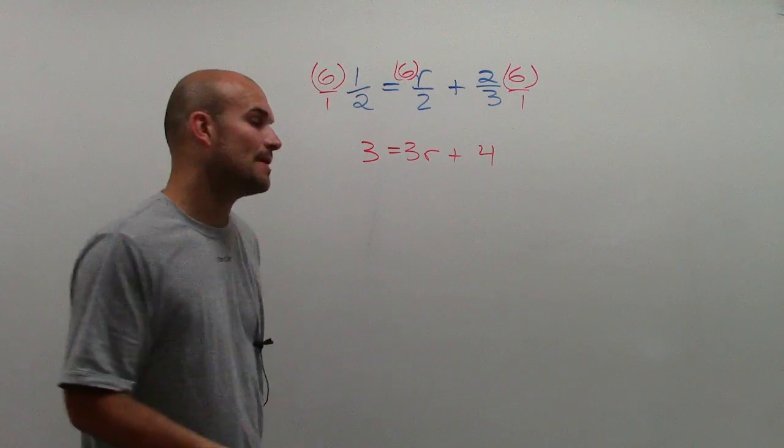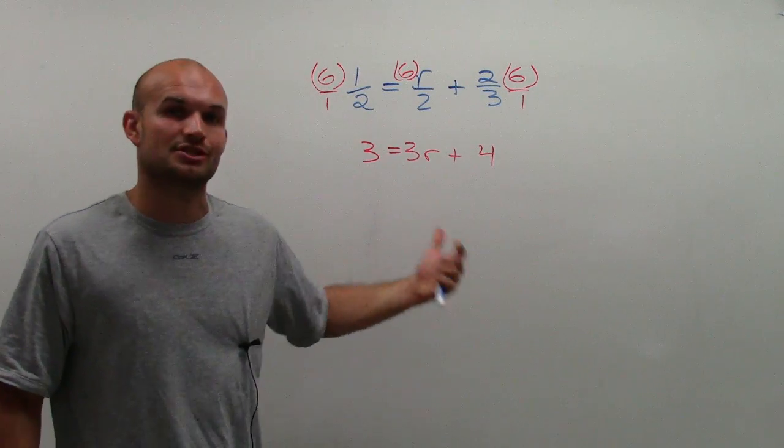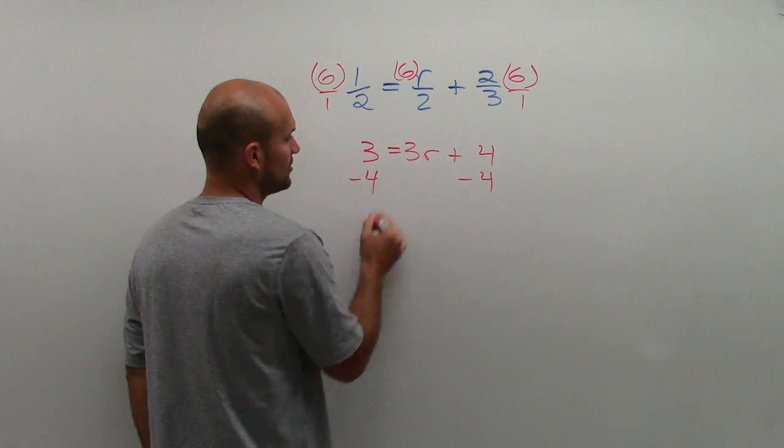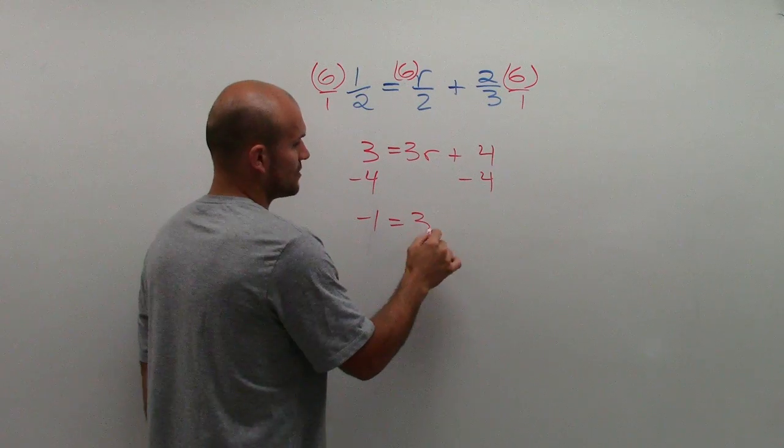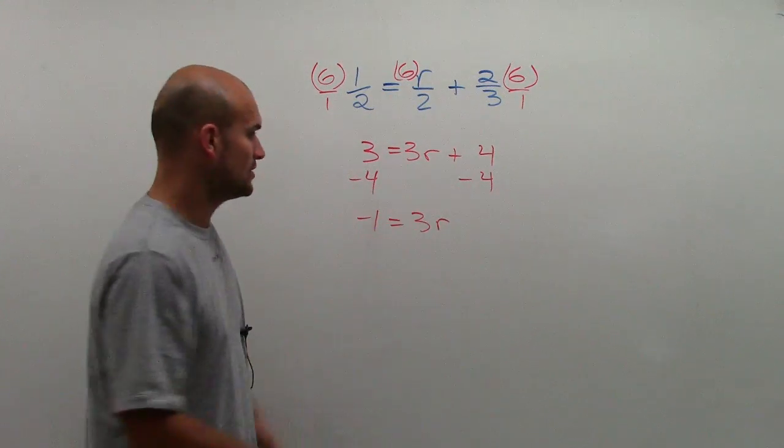So by using the reverse order of operations and inverse operations, I see that I need to undo addition and subtraction first. So instead of adding four, I'm going to subtract the four on both sides. I get negative one equals three R. Remember, both sides of the equal sign. That was by the subtraction property of equality.